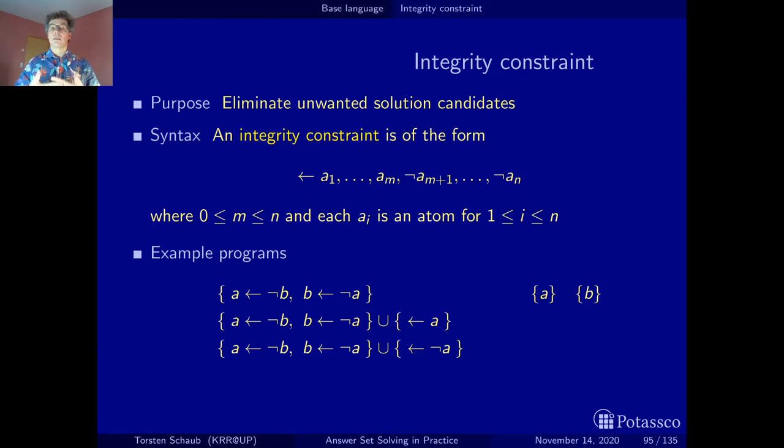Now we can add an integrity constraint saying it must not be the case that a is true, which leads to the destruction of this stable model. So this logic program has a single stable model which is b.